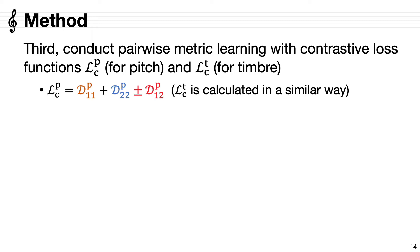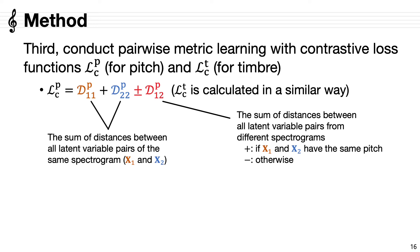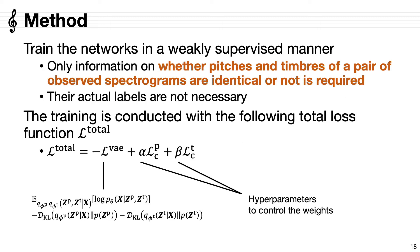Hereafter, I explain our method in terms of pitch. Note that we take the same procedure for timbre. The first two terms represent the sum of distances between all latent variable pairs of the same spectrogram. The last term represents the sum of distances between all latent variable pairs from different spectrograms. We add this term if the two spectrograms have the same pitch. Conversely, we subtract this term if the two spectrograms have different pitches. What contrastive loss functions do is pull similar samples close to each other and keep dissimilar samples far from each other in each latent space. This makes the latent pitch and timbre spaces human interpretable.